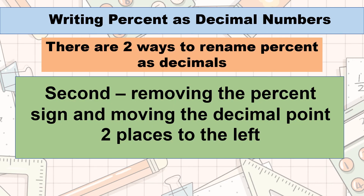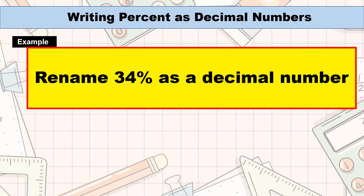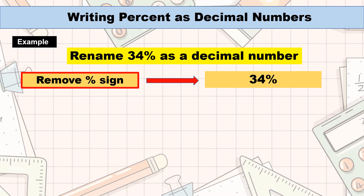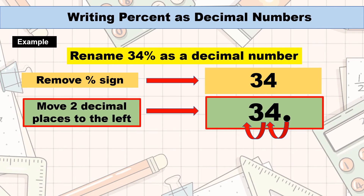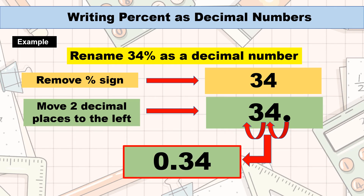Another method is by removing the percent symbol and moving two decimal places to the left. Example: rename 34% as a decimal number. In writing 34% as a decimal number, remove first the percent symbol. Now, move two decimal places going to the left. We will then have 0.34, or 34 hundredths. Therefore, 34% is 0.34, or 34 hundredths in decimals. Take note that we use 0 to take the place of the digit in the units place value.